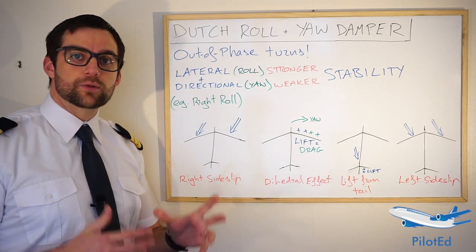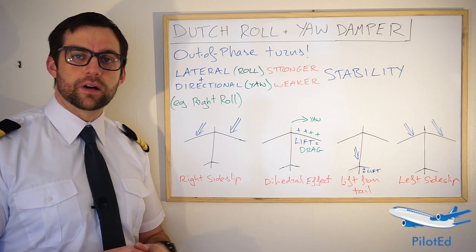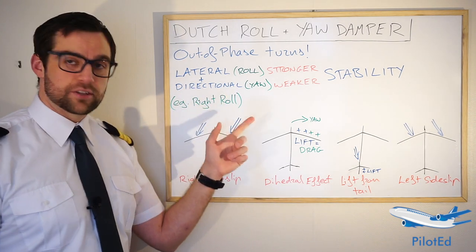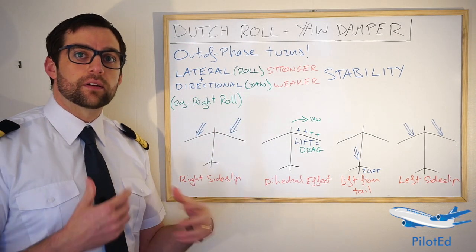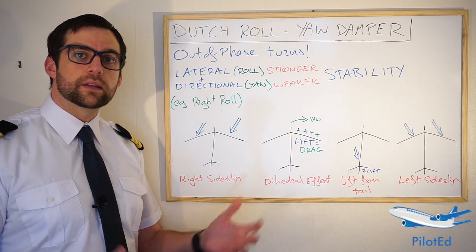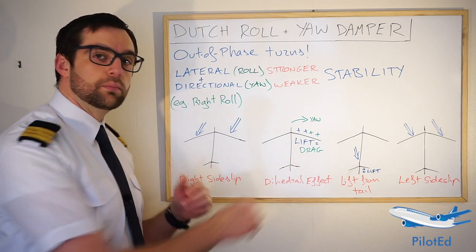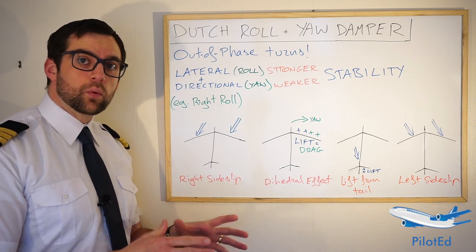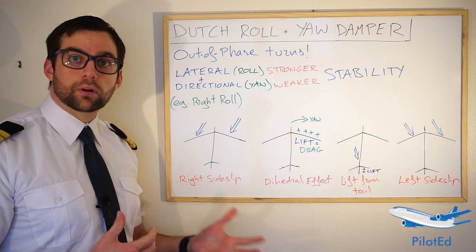Going back to one of my other videos where I talked about stability — feel free to search for it — we can talk about lateral stability and directional stability again, and why one being weaker or stronger than the other causes Dutch roll. In my example I'm going to talk about a slightly swept-back wing with a dihedral, which is the most common type of aircraft that suffers Dutch roll problems.